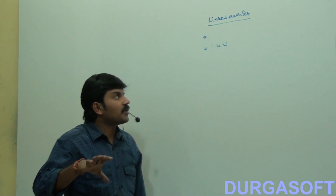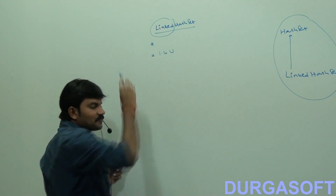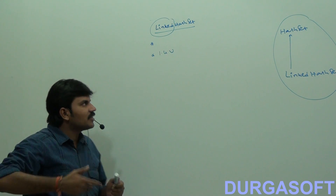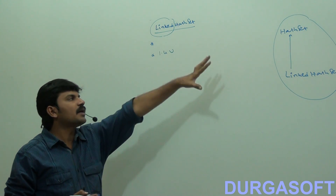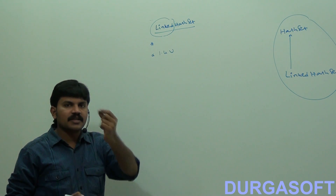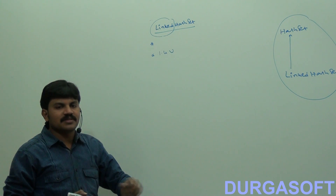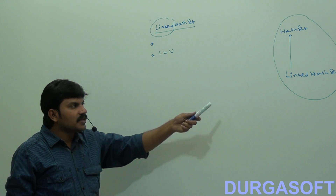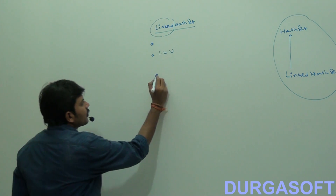If anyone asks what is the difference between HashSet and LinkedHashSet, don't just say 'linked' — there is a functional difference. LinkedHashSet is exactly the same as HashSet except one small difference: in HashSet insertion order is not preserved, but in LinkedHashSet insertion order is preserved.